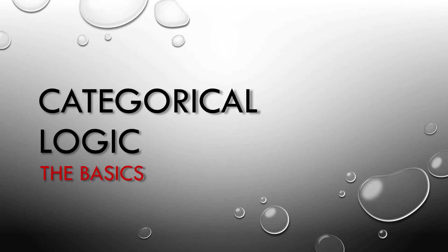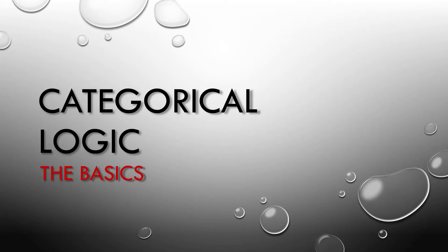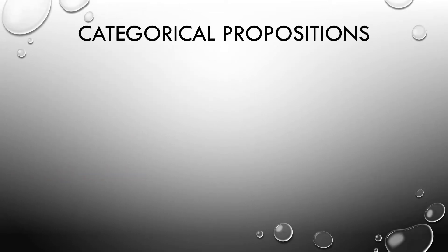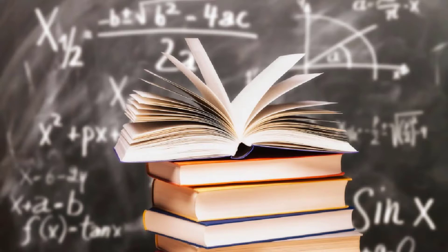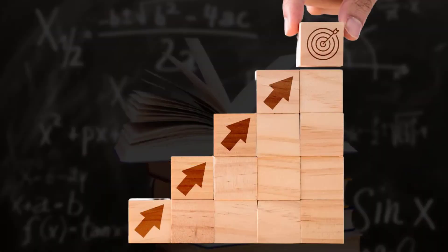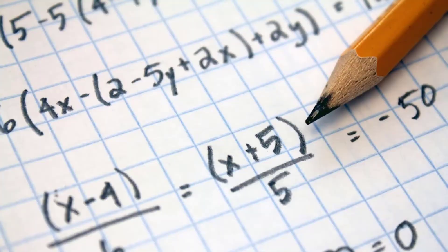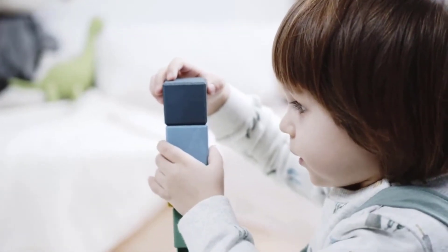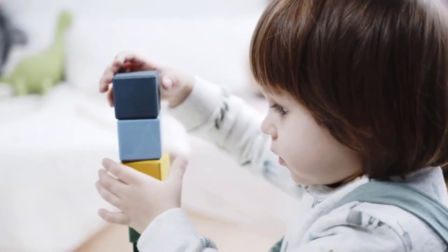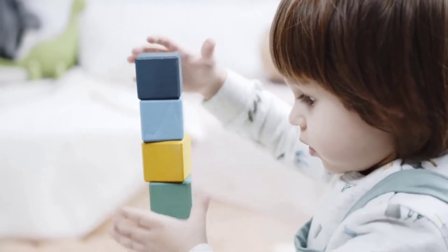We're going to be spending several episodes on categorical logic, and since our emphasis here is on the basics, we're going to recap briefly some of what we covered last time. Like math, deductive logic requires we build from the ground up. You can't move on to algebra until you know how to add and multiply, and you can't test the validity of a categorical syllogism until you know all of its building blocks.